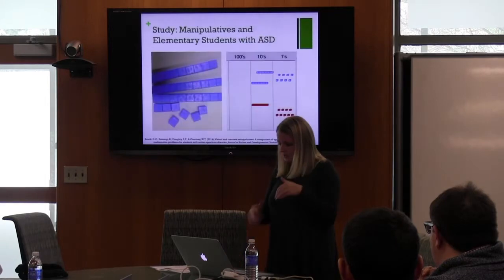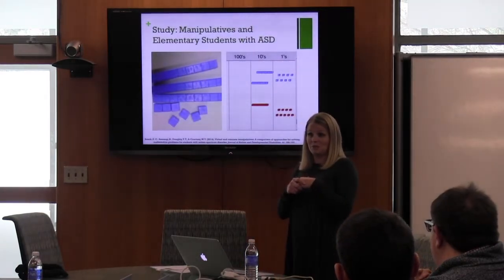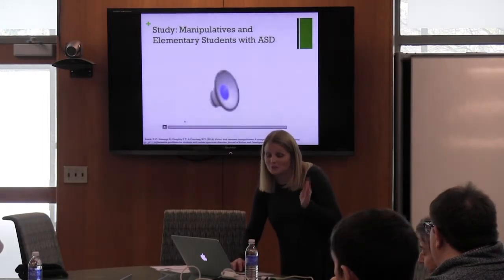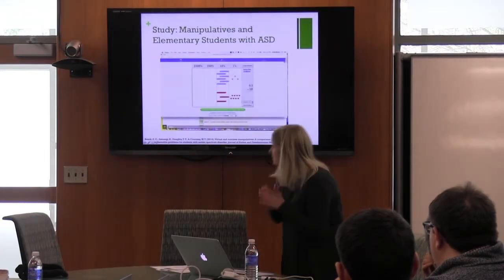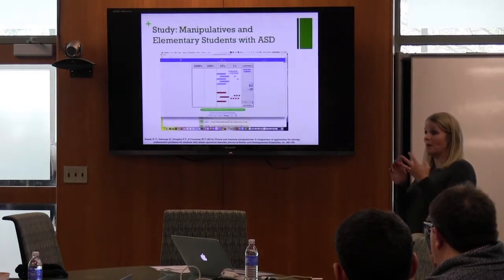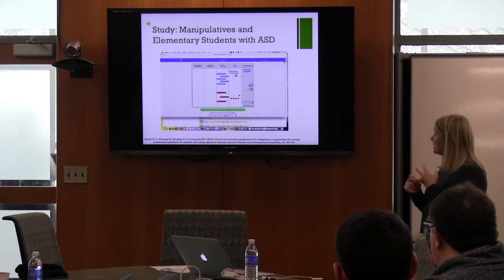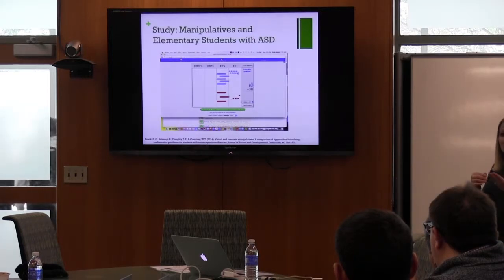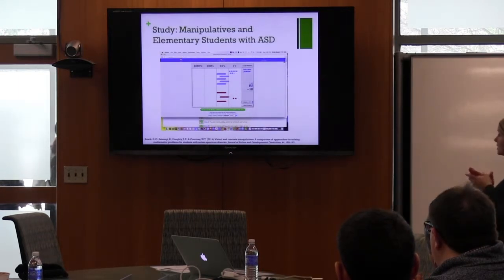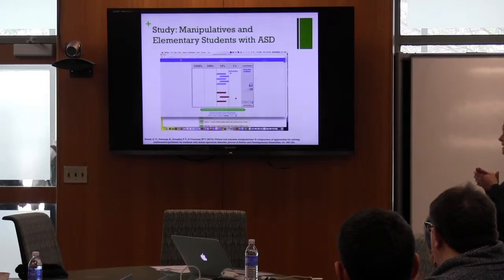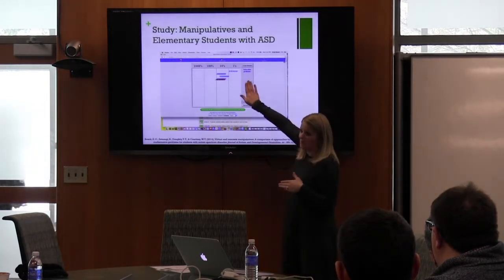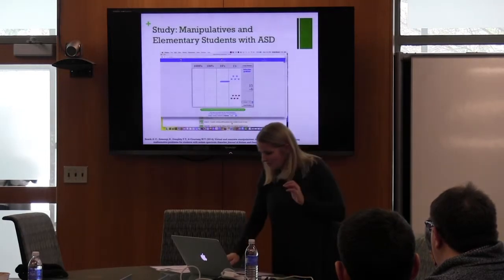We used virtual manipulatives from the National Library of Virtual Manipulatives. I'm going to show a brief clip because when I talk about the students' social validity, it will make sense if you see it. We were doing subtraction — single digit for two students and double digit for one — and it was based on their Key Math assessment. The answer was covered so they could not see it.